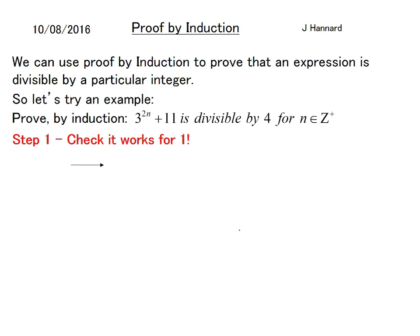So step one, check it works for one. Let n equal 1. So 3^(2×1) + 11 equals 20 because it's obviously 3 squared add 11 which is 9 add 11 which is 20. So 20 is divisible by 4 and therefore we say it works for one.